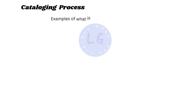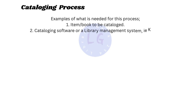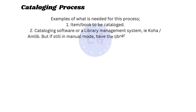For the cataloging process, you need: number one, a book or item to be catalogued; and number two, a software or library management system such as KOHA or AMLIB, among others. If you're still working manually, you'll need a card catalog and a pencil.